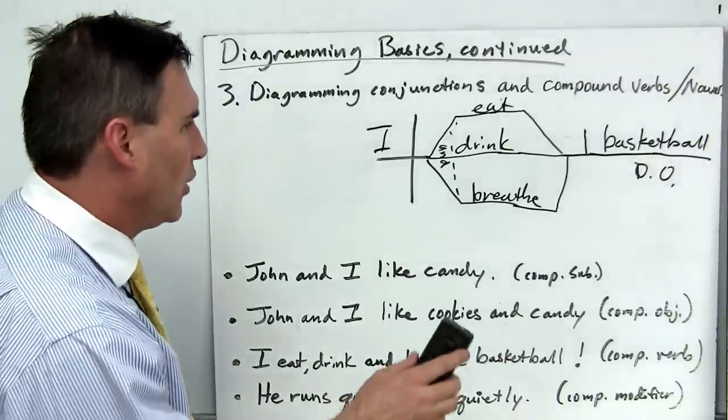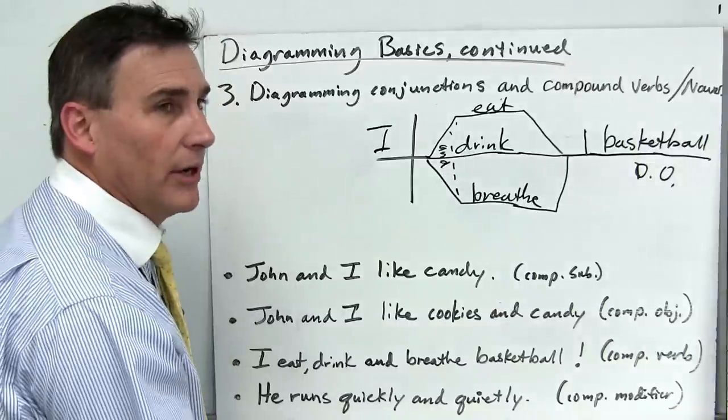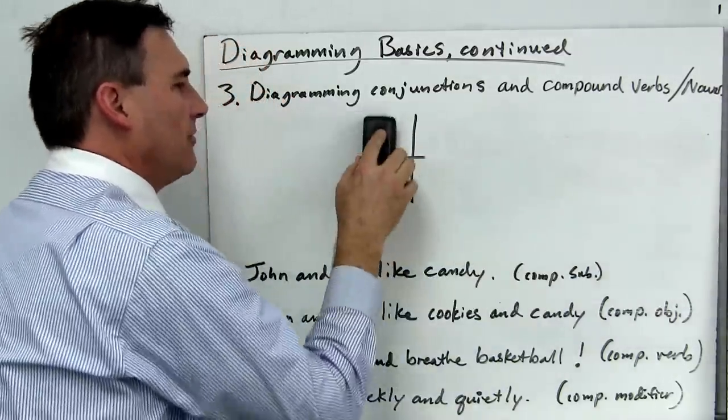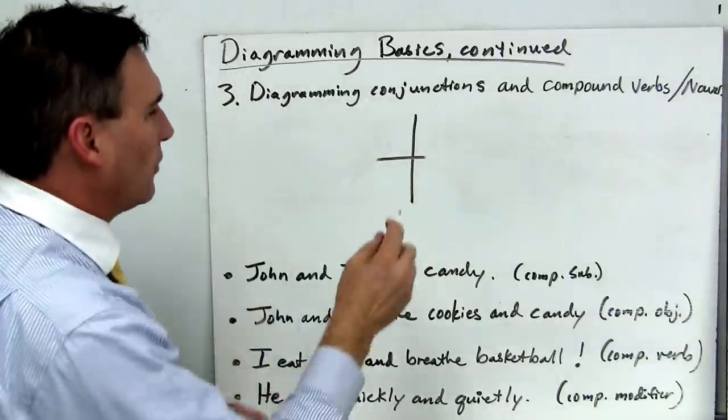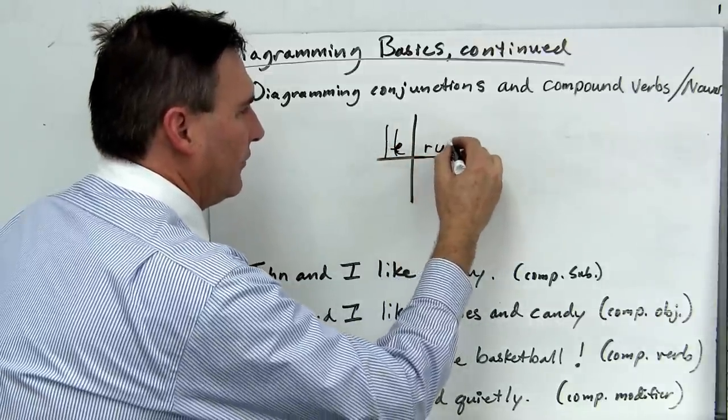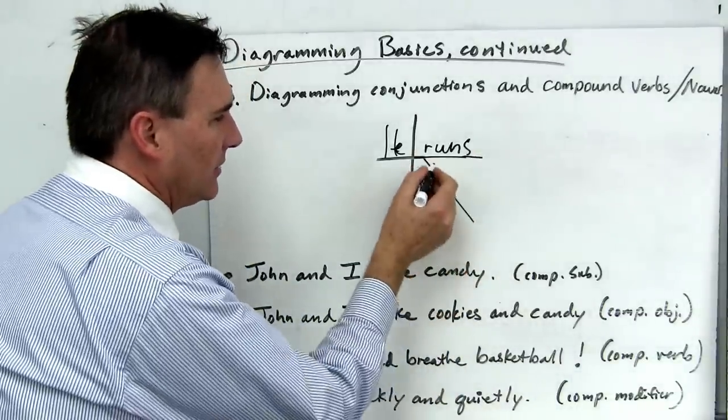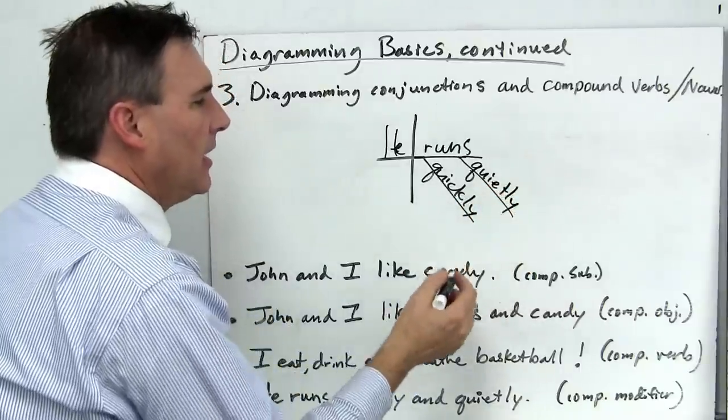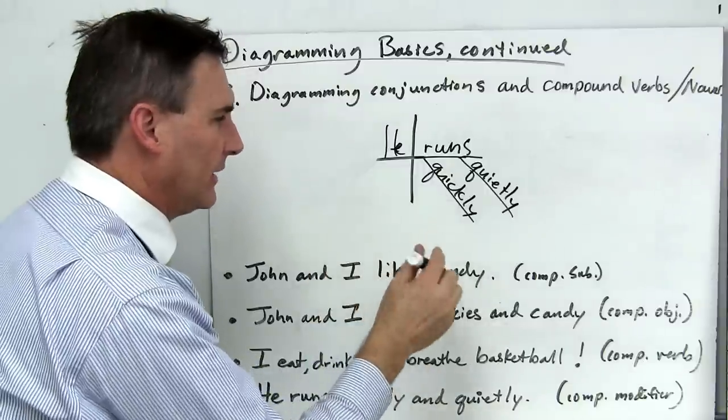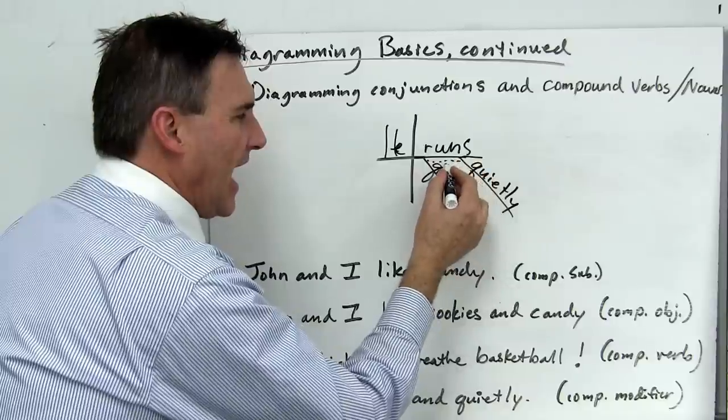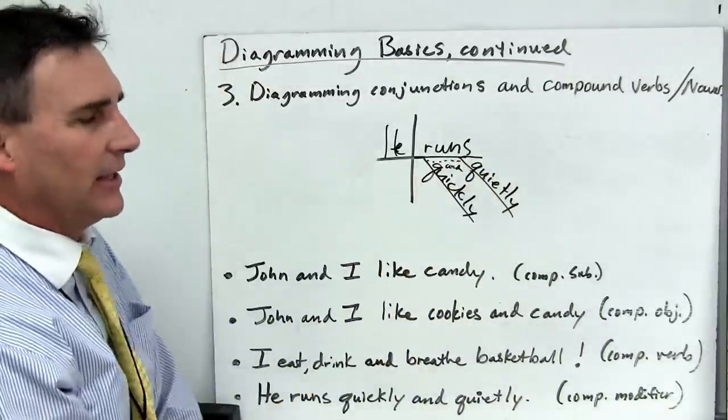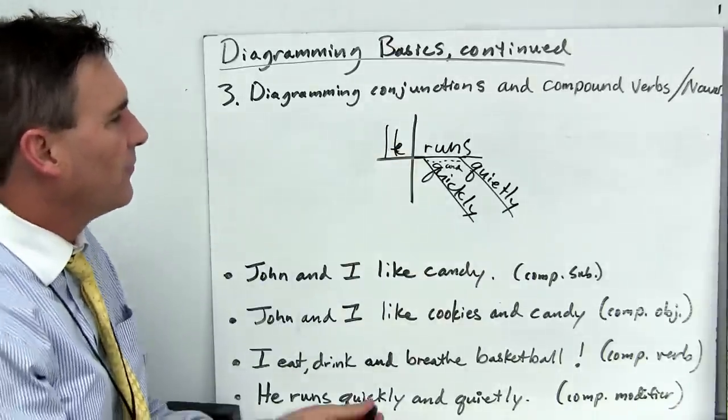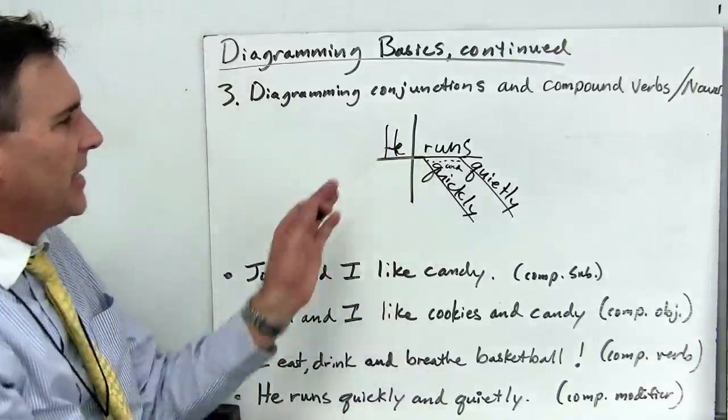Let's try one more where we have compound modifiers. Don't we say, boy, you know, I'm hungry and tired, or in this case, he runs quickly and quietly. Well let's start over with our sentence and see how that would look. Can you think about how that might look? Are you starting to get an idea? Let's start with the baseline. He does what? He runs. How does he run? He runs quickly. How else does he run? He runs quietly. Those two we could say in separate sentences, he runs quickly, he runs quietly. But if we're going to put it in one sentence, we'll almost certainly join them with the word and. So he runs quickly and quietly. Compound modifiers.